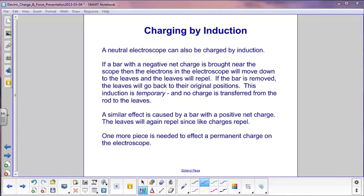A neutral electroscope can also be charged by induction. For example, if a bar with a negative net charge is brought near the scope, then the electrons in the electroscope will move down to the leaves, and the leaves will repel. Now, if the bar is removed, there will be no force pushing the electrons down. They'll return back to their original positions. The leaves will go down.